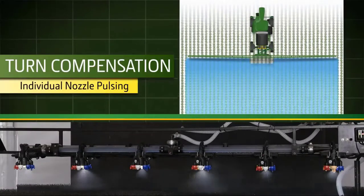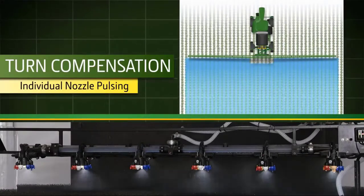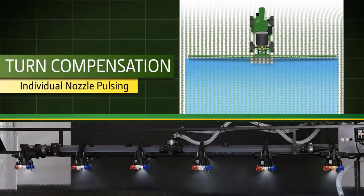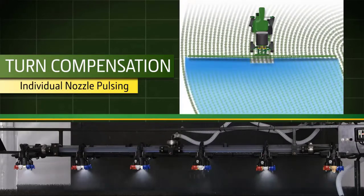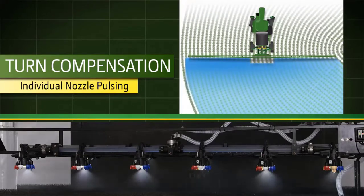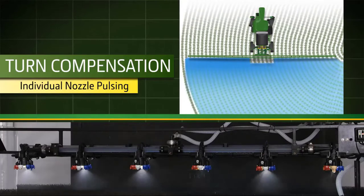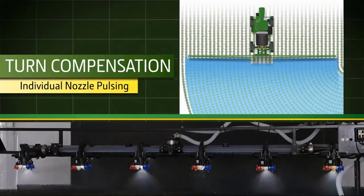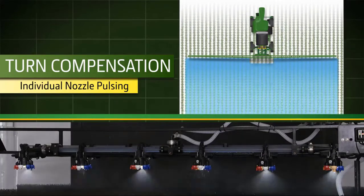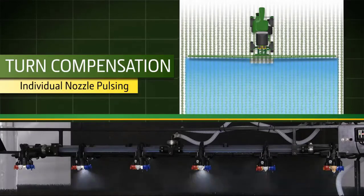This example is showing the turn compensation capabilities. You'll notice as the sprayer goes through the turn that we're able to maintain the application rate throughout the length of the boom. So you're not over applying on that inside part of the curve or under applying on the outside part of the boom.